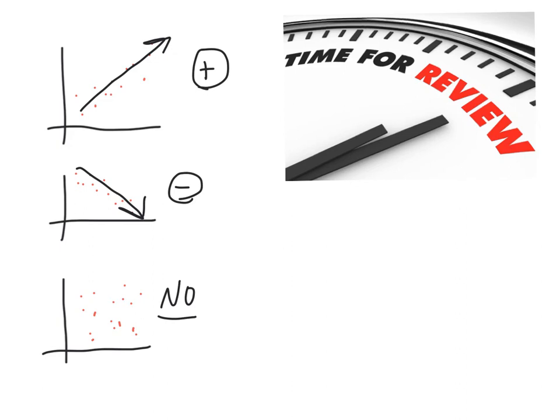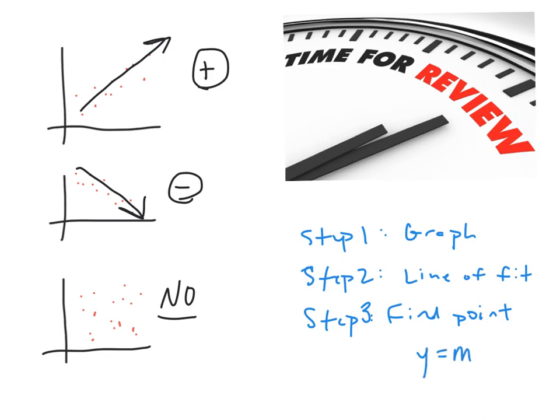The steps when it comes to figuring out the line of best fit: step 1, graph the points. Step 2, figure out your line of fit. Step 3, find your two points then plug it into the y equals mx plus b equation.